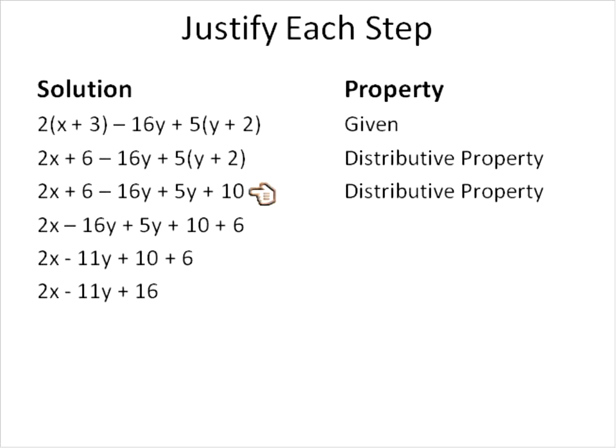Now, when we move from step 3 to step 4, you'll notice a couple things change. One, this 6 moves to the very end. Everything else pretty much just stays the same. The negative 16y shifts, the 5y shifts, the 10 shifts. But this positive 6 goes to the end. And what is that property when you move things around? You commute them from one place to another. That's the commutative property. So that would be the justification for this step.